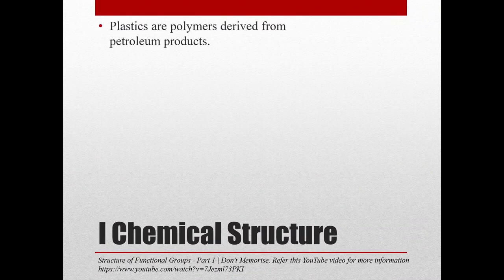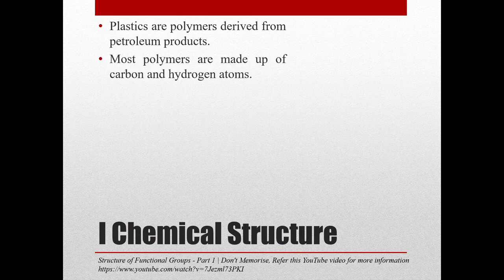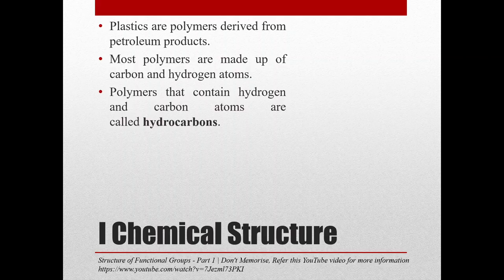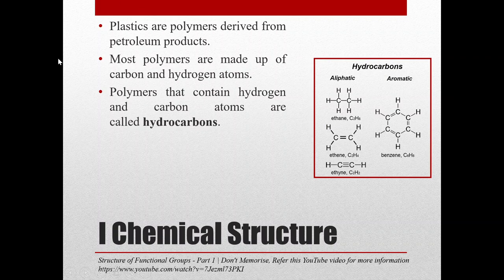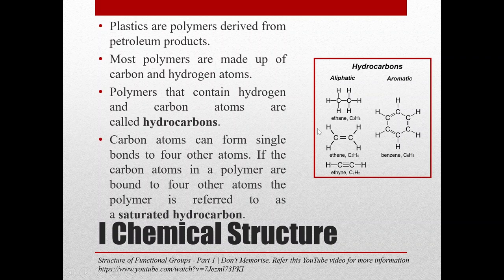Chemical structure means that plastics are polymers derived from petroleum products, and most of these polymers are made up of carbon and hydrogen atoms. Polymers containing hydrogen and carbon atoms are called hydrocarbons, classified as aliphatic and aromatic. Carbon atoms can form four single bonds with four other atoms. If carbon atoms in a polymer are bound to four other atoms, the polymer is referred to as a saturated hydrocarbon. In the aliphatic type, each carbon atom is connected to three hydrogen atoms and has one bond with another carbon atom — so each carbon atom is fully saturated.